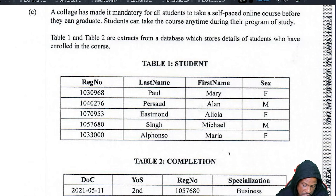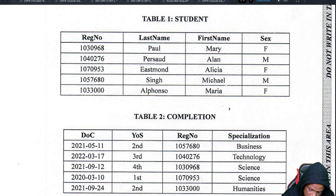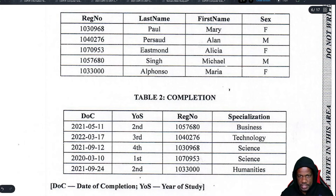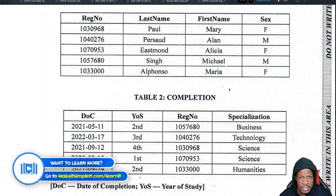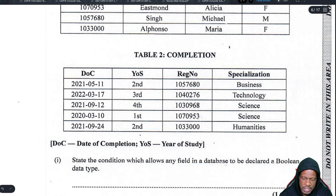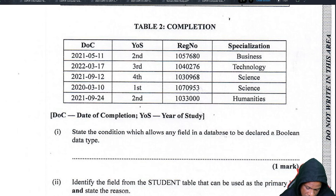The college has made it mandatory for all students to take a self-paced online course before they can graduate. Students can take the course anytime during their program of study. Tables one and two are extracted from the database which stores details of students enrolled in the course. Database questions normally trouble students because the only time students do databases is for their SBA, so they don't know the theory.